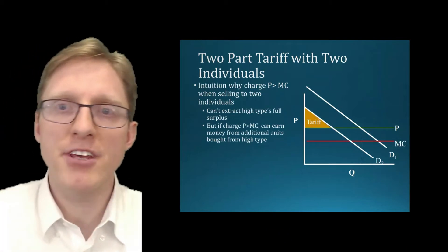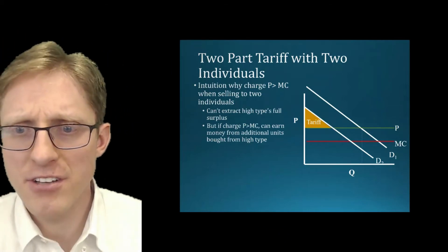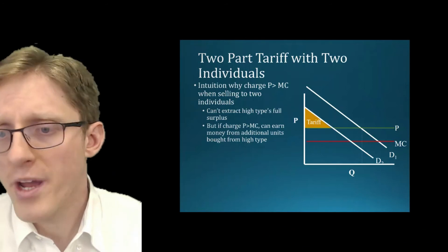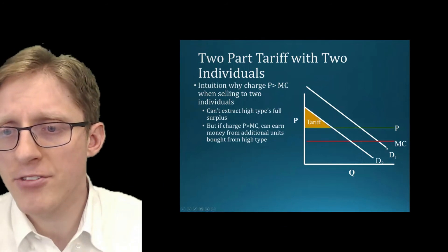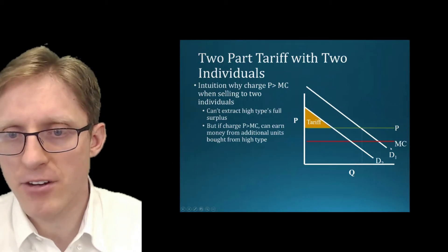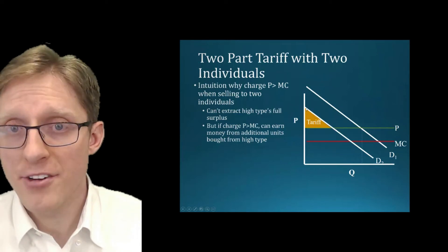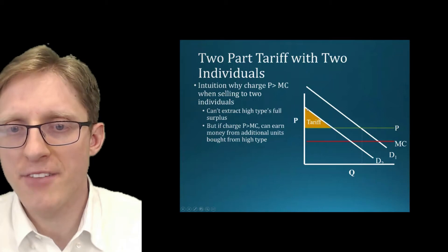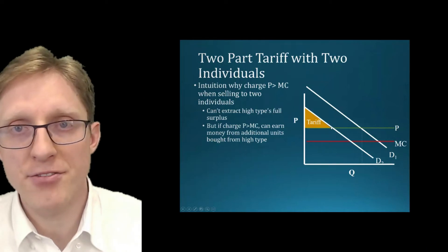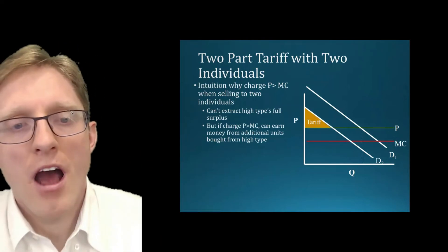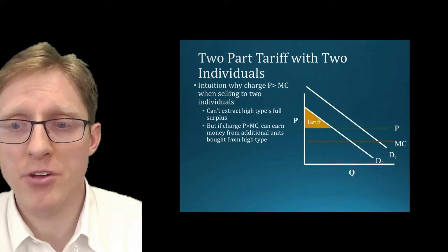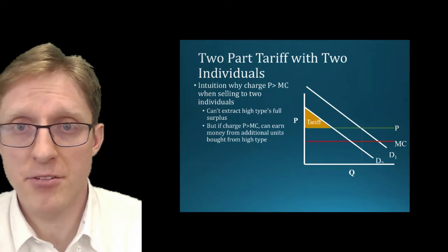Now let's think about what happens if you have two different types of individuals in the market. To simplify, we'll assume there are exactly two individuals. Their two inverse demand curves are shown on this graph: the first individual has a higher, further-out inverse demand curve, and the second individual has lower demand — his inverse demand is given by this downward sloping line, and he's willing to pay less for any given quantity. Let's think about what happens if they charge a per unit price greater than marginal cost, versus dropping the price all the way to marginal cost and increasing the tariff.